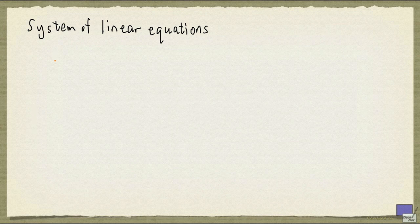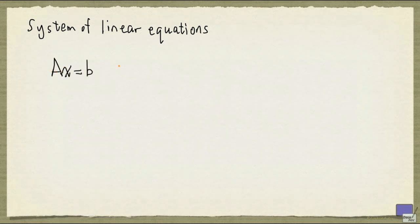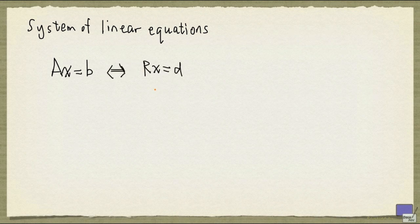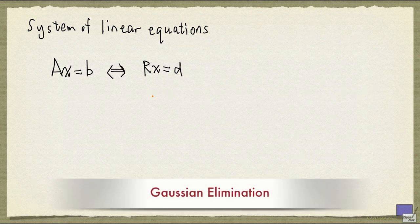The other views the process as transforming Ax equal to b to an equivalent system, Rx equal to d, where R is in reduced row echelon form. In this video, we are going to combine the ideas from these two views and describe a procedure that can be implemented easily. This procedure is usually called Gaussian elimination.